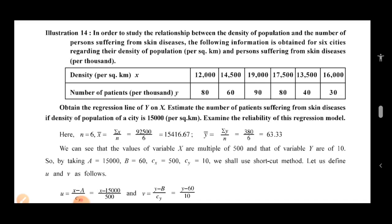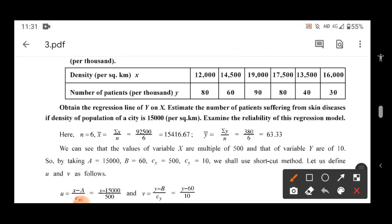Example number 14. We are given the density and the number of patients. You have to obtain the Regression Line Y on X. Estimate the number of patients suffering from skin disease if density of population of a city is 15,000. And examine the reliability of the regression model.